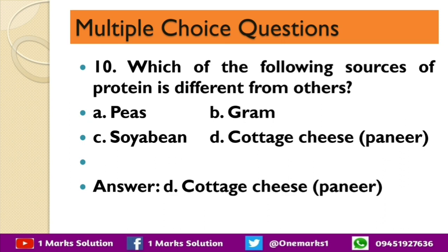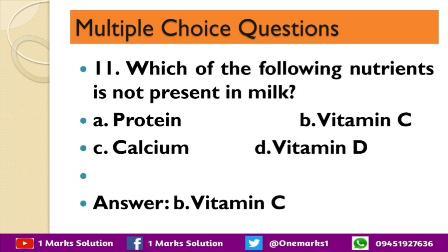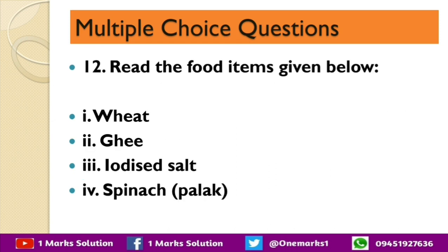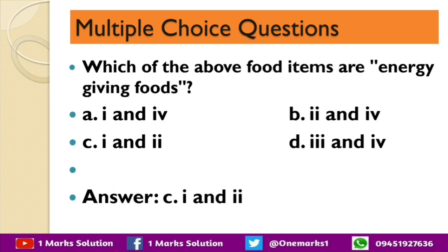Which of the following nutrients is not present in milk — protein, vitamin C, calcium, or vitamin D? The correct answer is vitamin C. From the items wheat, ghee, iodized salt, and spinach, which are energy-giving foods — one and four, two and four, three and four, or one and two? The correct answer is one and two, meaning wheat and ghee.